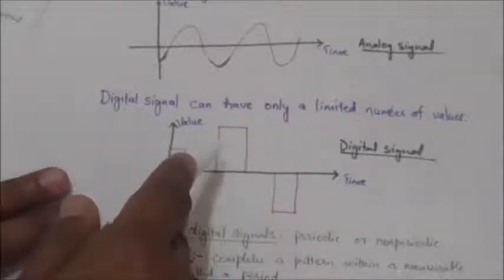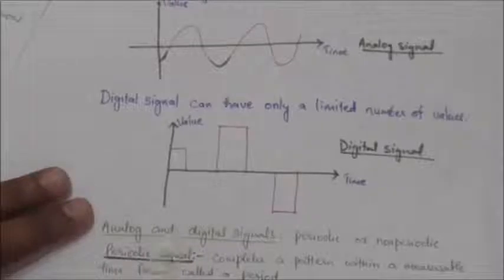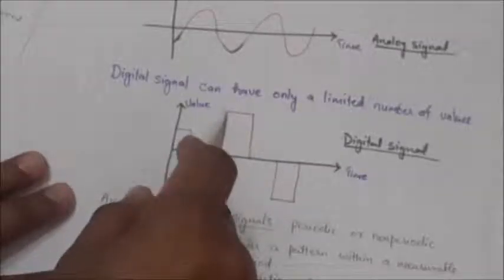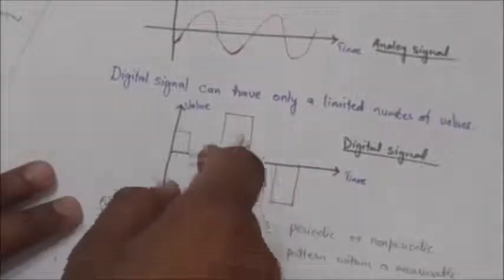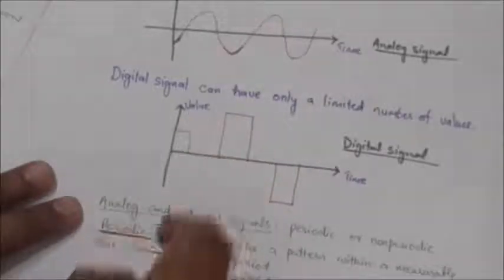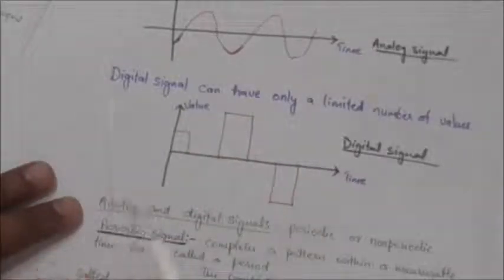These vertical lines of the digital signal demonstrate the sudden jump that the signal makes from value to value.